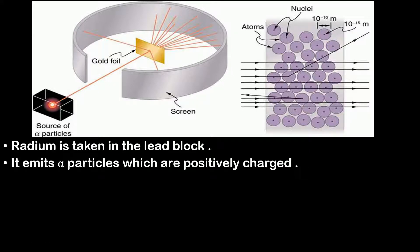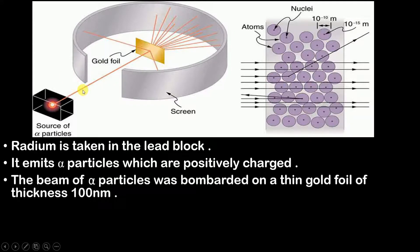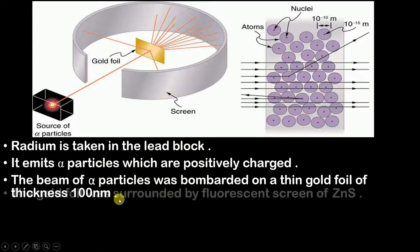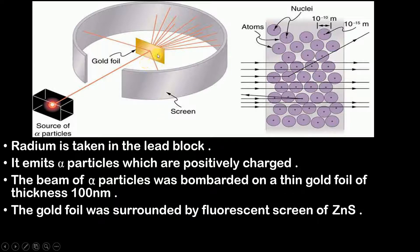Now you might be wondering how radium can emit alpha particles. This beam of alpha particles is bombarded on a very very thin plate of gold foil. The gold foil has a thickness of 100 nanometers, which is a very very small amount. This gold foil is surrounded by a screen which is made up of zinc sulfate.